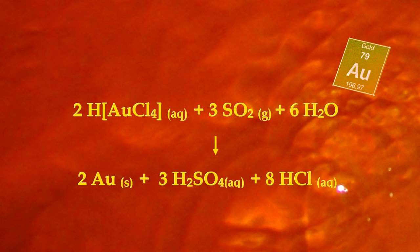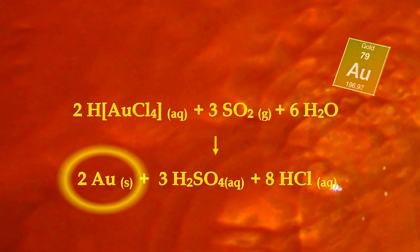Gold can be precipitated from solution using sulfur dioxide gas as a reductant to produce metallic gold.